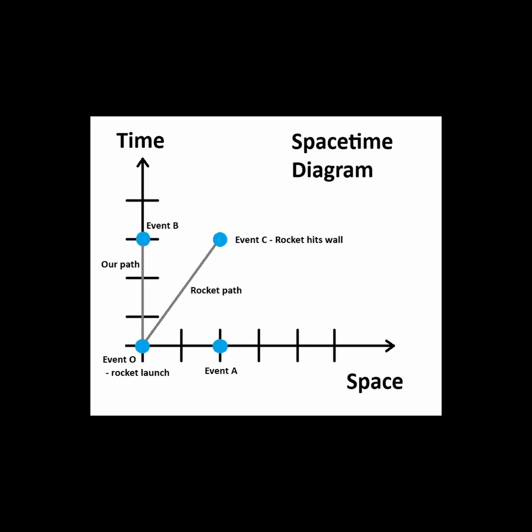For example, let's launch a model rocket from our location and watch the events unfold from our position where we are standing still or at rest. We can call this event O and we can pick that to be the origin for our spacetime map.